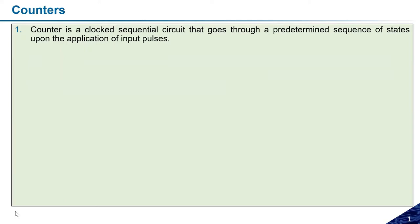The counter counts how many clock pulses have been received. A counter is a clock sequence circuit that goes through a predetermined sequence of states upon application of an input pulse. Suppose I want to make a counter from 0 to 7 — it will start from 0, 1, 2, 3, 4, 5, 6, 7. Once this sequence finishes its last value, it will come back to its original position again. You can also modify it to terminate at some point rather than cycling back.